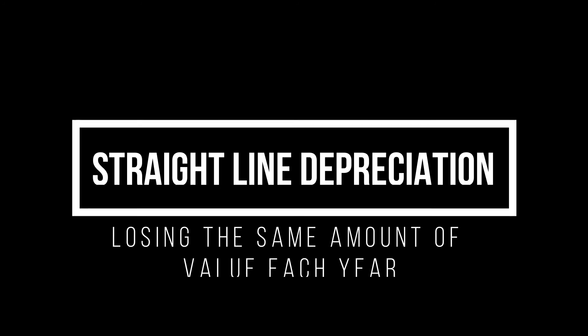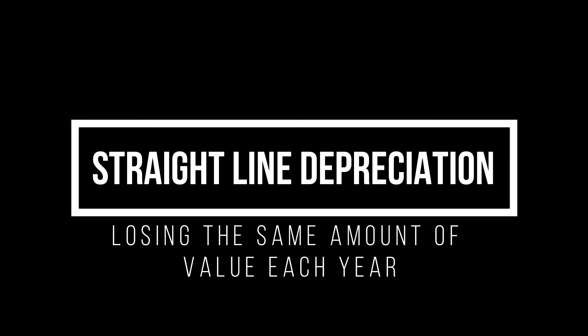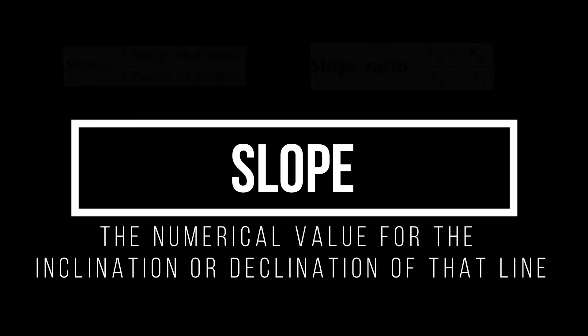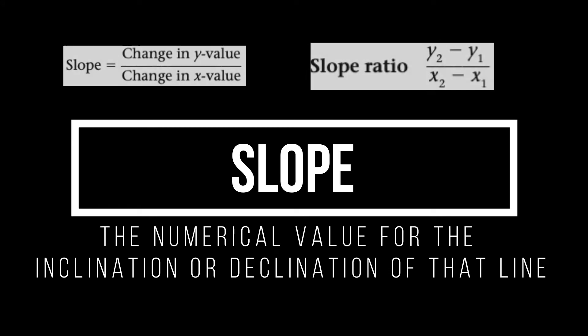The next vocabulary word is straight-line depreciation. You can lose value, but when we're talking about losing value in a straight-line method, it means it's going to lose the same amount of value year over year. So if you lose $2,000 in value a year, every year it's going to be that same $2,000 lost in value for that particular item. The last vocabulary word is slope — a numerical value for the inclination or declination of a line. This is going to be the change in y value over the change in x values, written as y2 minus y1 over x2 minus x1.